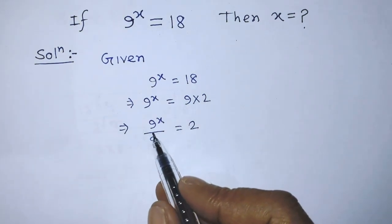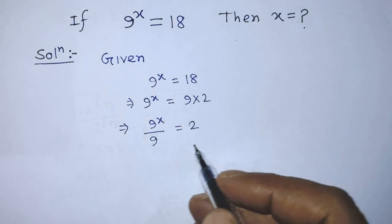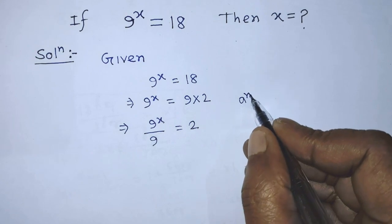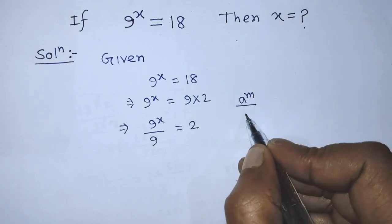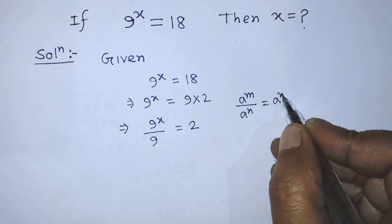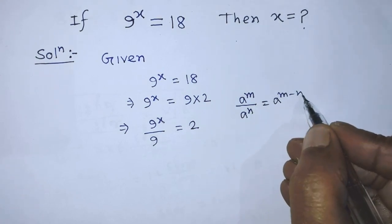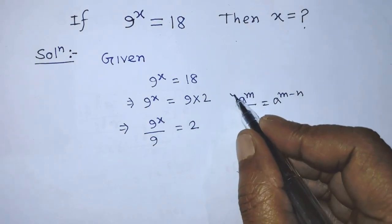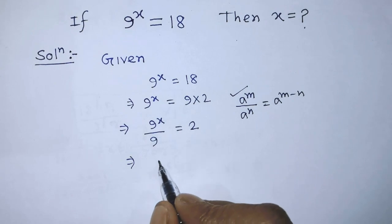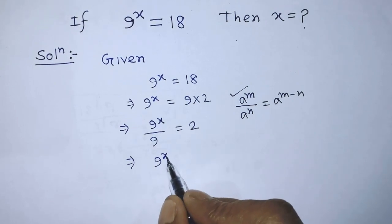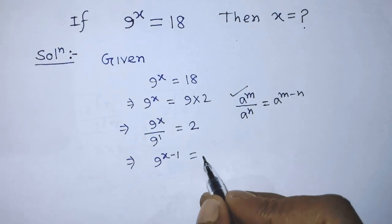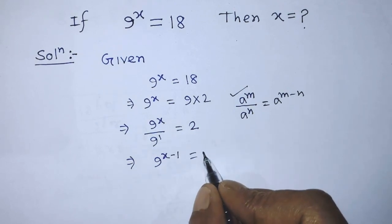To simplify the left hand side of this equation, we have to apply the formula: a to the power m over a to the power n is equal to a to the power m minus n. According to this formula, we can write 9 to the power x minus 1 is equal to 2 on the right hand side.